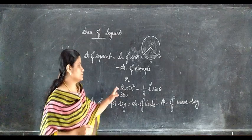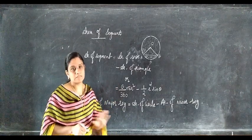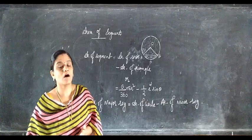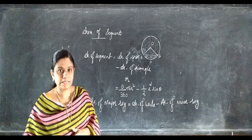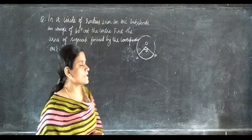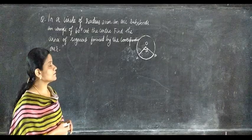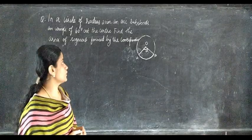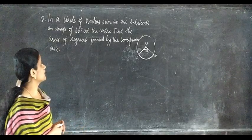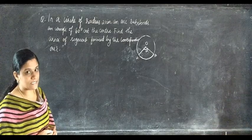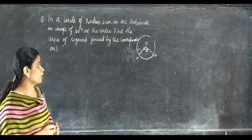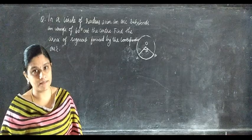So these are the two formulas for finding the area of segments. The first question is: in a circle of radius 21 cm, an arc subtends an angle of 60 degrees at the center. Find the area of the segment formed by the corresponding arc.